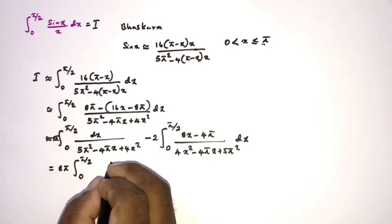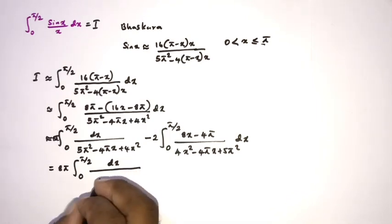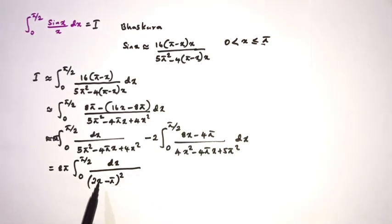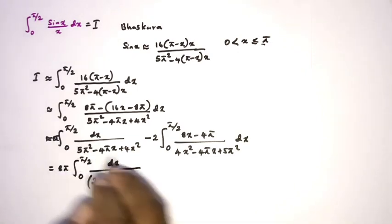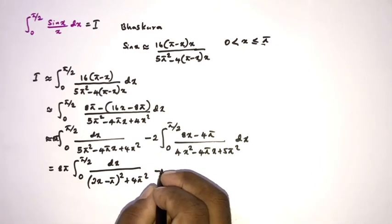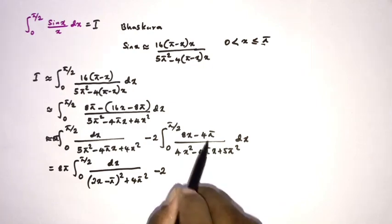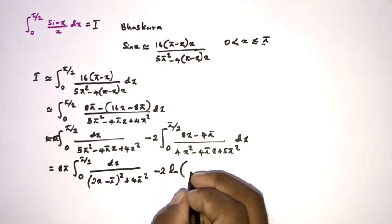For the first integral, I write the denominator as a perfect square: 4x² − 4πx + 5π² equals (2x − π)² plus 4π². For the second integral, the numerator 8x − 4π is the derivative of the denominator, so that integral evaluates to the natural log of 4x² − 4πx + 5π².